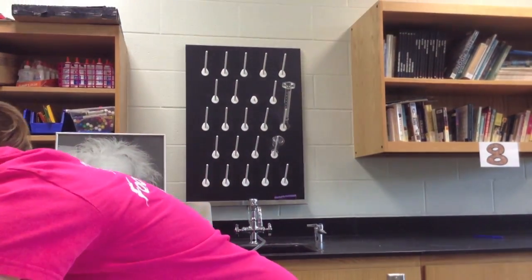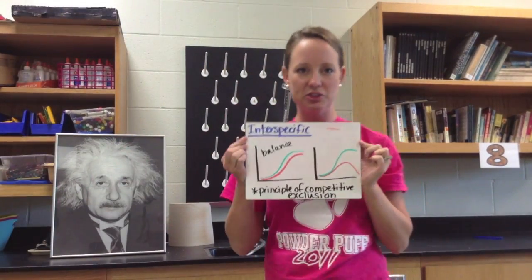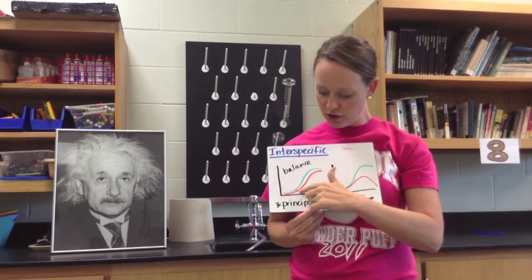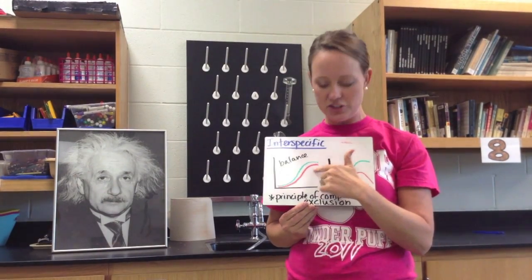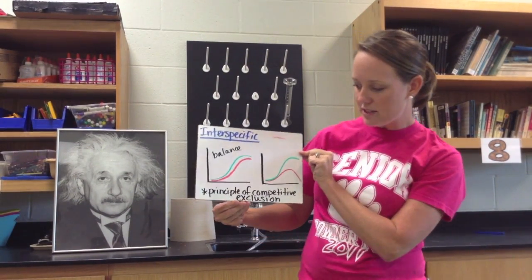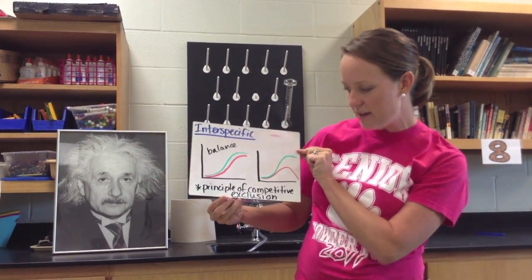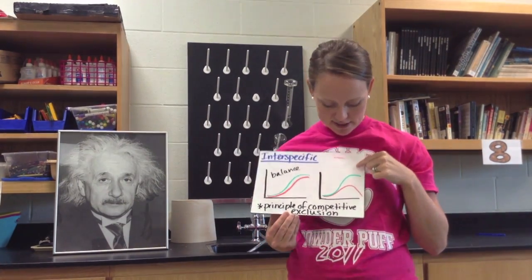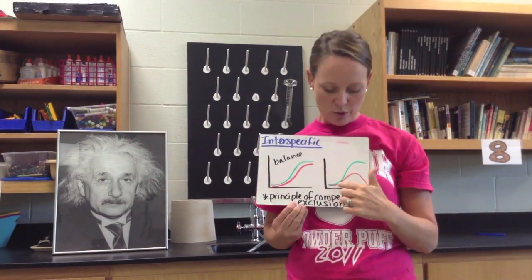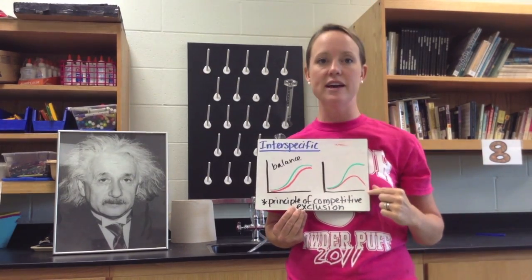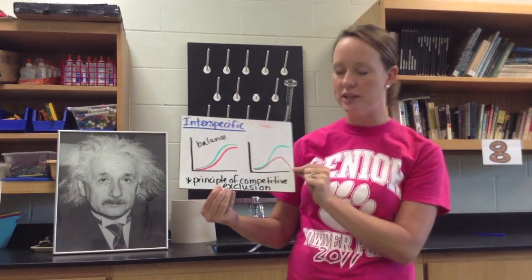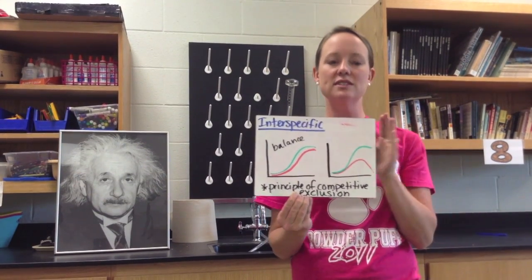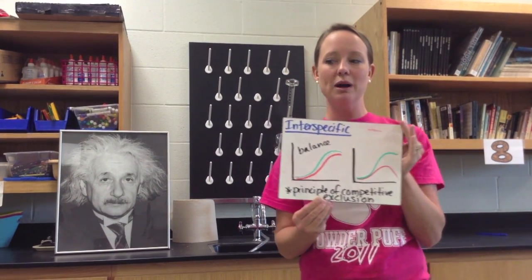If we look at interspecific competition between two different species, one of two things is going to happen. Either they're going to balance each other and we see logistic growth, or we get what is called the principle of competitive exclusion. The species that out-competes the other will reach logistic growth, while the other will see a crash and be excluded — either migrating out of the ecosystem or having its population crash.